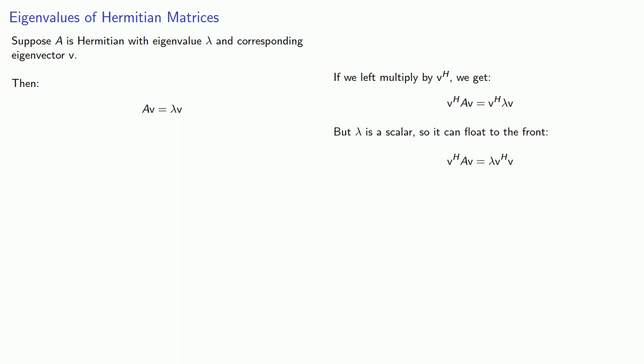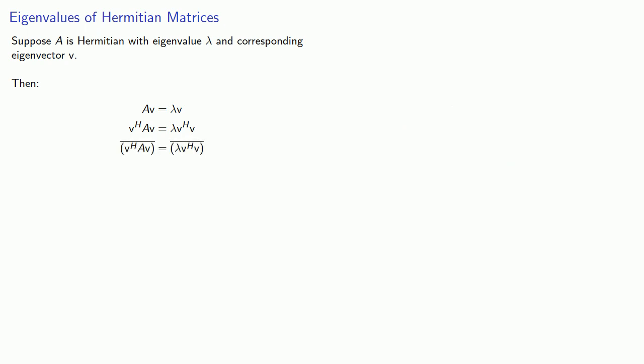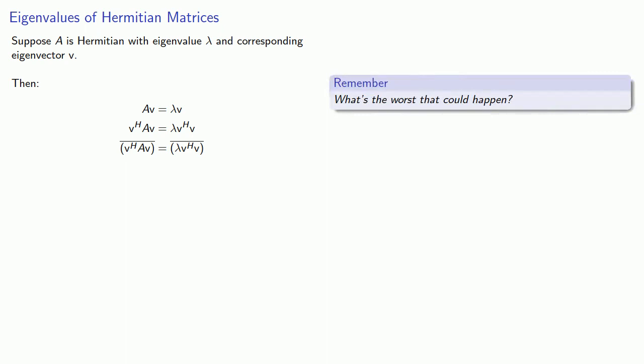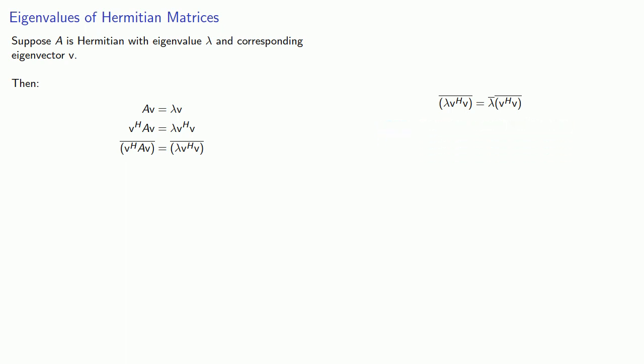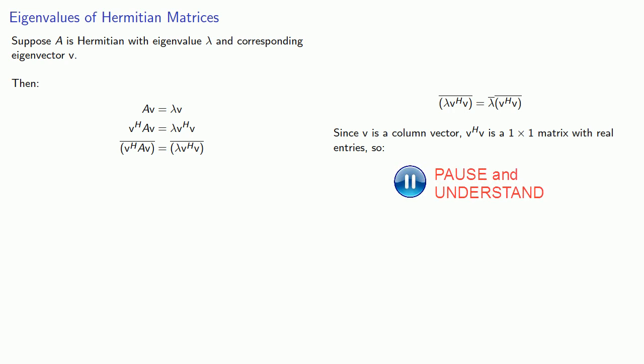Multiplying on the left by V Hermitian gives V Hermitian A V equals V Hermitian lambda V. Since lambda is a scalar, we can float it to the front. Now let's take the conjugate of both sides. The conjugate of a product is the product of the conjugates. Since V is a column vector, V Hermitian V will be a 1-by-1 matrix with real entries, and the conjugate of a real number is just the real number.